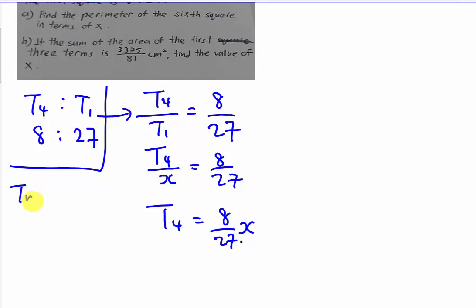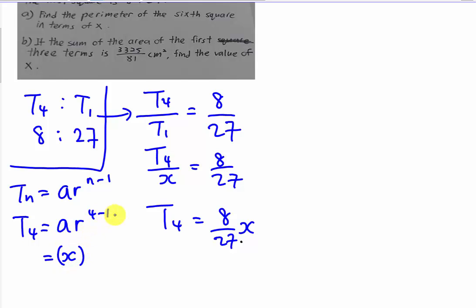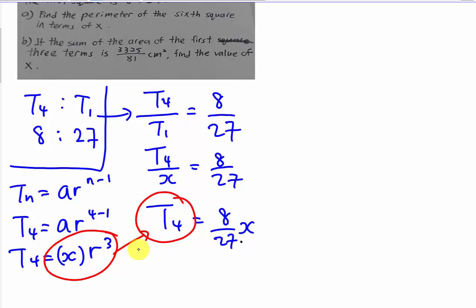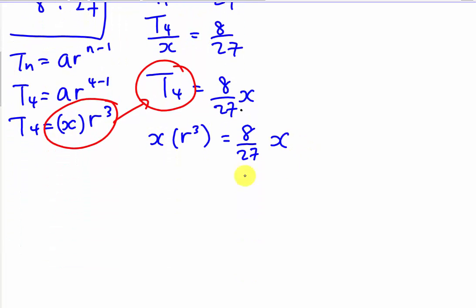If you understand the formula for Geometric Progression: tn equals ar^(n-1). So for t4, you get ar^(4-1). The a is the first term, which is x, and 4 minus 1 gives r to the power of 3. So I can substitute t4 here — the purpose is to find out what the ratio is. So my t4 equals x multiplied by r^3, which equals 8 over 27x. I just need to solve this simple equation to easily get r.